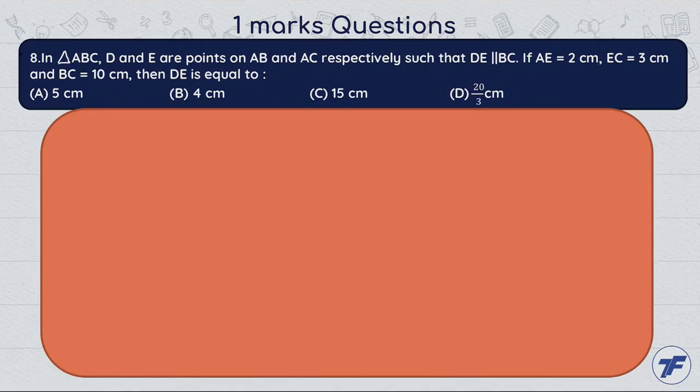Now the next question, question number 8. In triangle ABC, D and E are points on AB and AC respectively such that DE is parallel to BC. If AE equals 2 centimeters, EC equals 3 centimeters, and BC equals 10 centimeters, then find the length of DE.